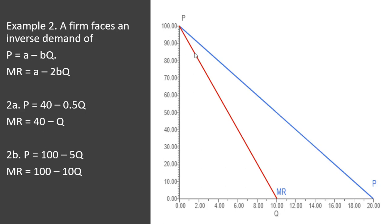And marginal revenue will look just like demand, but a slope that is twice as steep. So notice here, marginal revenue will touch the horizontal axis, not at 20, but half that value or 10.